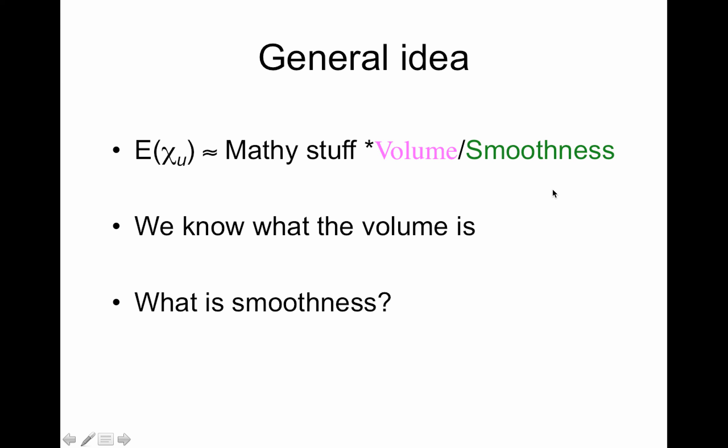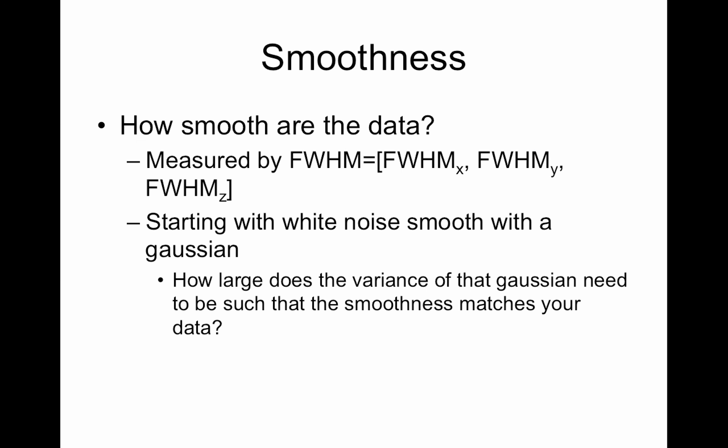So what's the smoothness? How smooth are the data? So this is measured by something called the full width half maximum, which means you take a Gaussian distribution, go to the top of it, go halfway down, and look how wide it is. I'll have a little Gaussian distribution later where I can show you this.